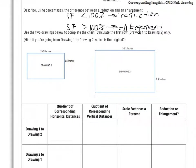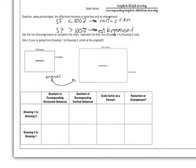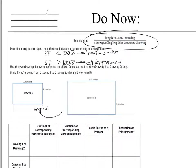It says using the diagrams below, complete the chart — calculate the first row of drawing one to drawing two only. If you're going from drawing one to drawing two, which one is the original? Well, if we're going from drawing one to drawing two, that means drawing one is the original. Our scale factor is always going to be new over old, and we have that reminder up here as well. So the length in the scale drawing compared to the original.